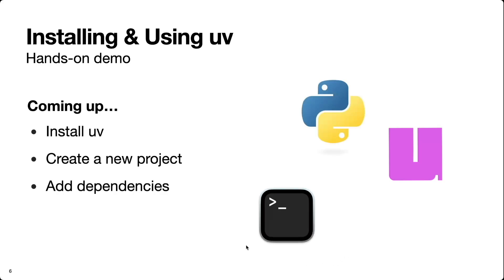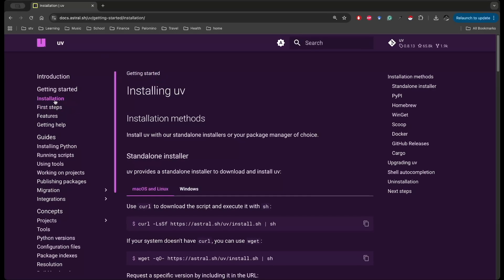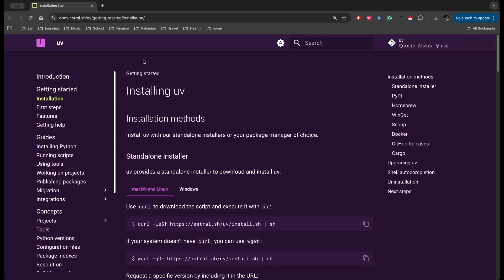Now that we have a basic understanding of what uv is and why we should consider using it, let's go through a hands-on demo. I'm going to cover three things: how to install uv on your machine, how to create your first project using uv, and how to add dependencies. Here we're at the uv docs on their installation guide — I'll drop this link in the description below.